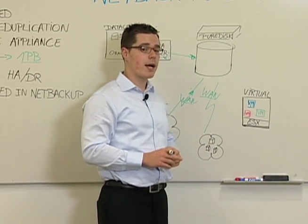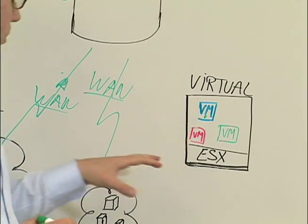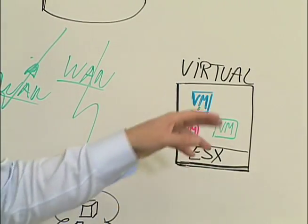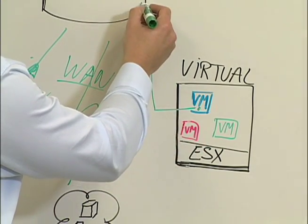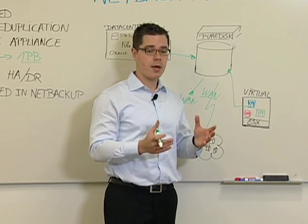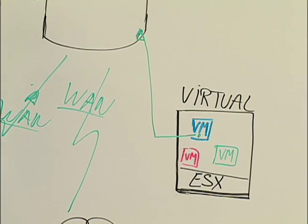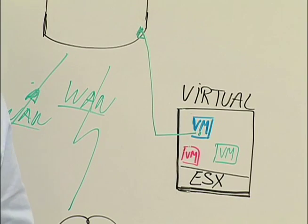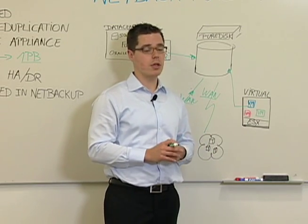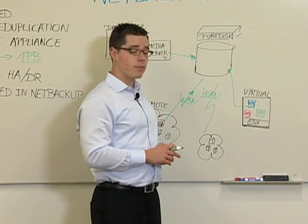The third use case is backing up and protecting virtual environments. There are two ways to do this. You can run the PureDisk client inside the VMware Guest, offering dedupe at the source level, backing up directly to the PureDisk environment — dedupe happens in the client with less CPU and memory utilization. Or you can do off-host deduplication, moving a snapshot from the ESX server to a NetBackup media server where it is deduped in the same way.